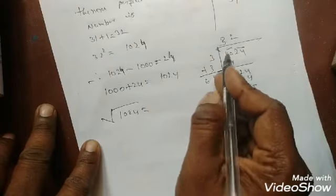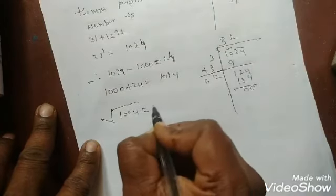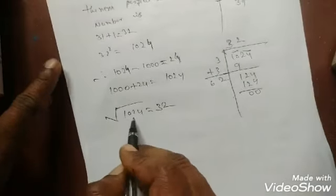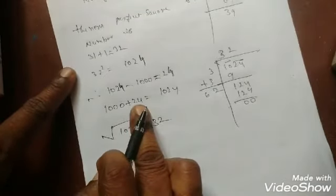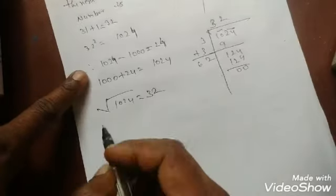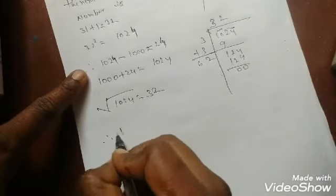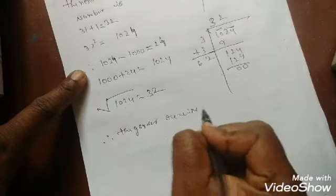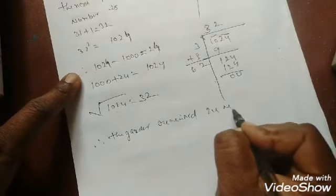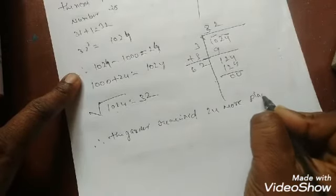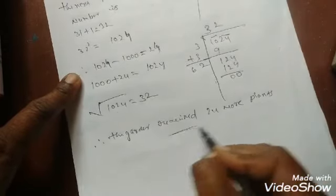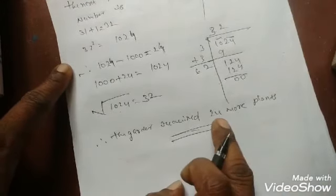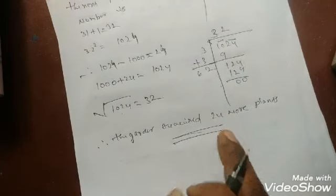24 more plants needed. Therefore, the gardener required 24 more plants. The gardener needs 24 more plants.